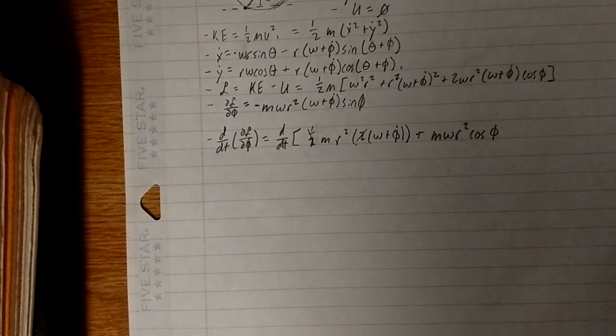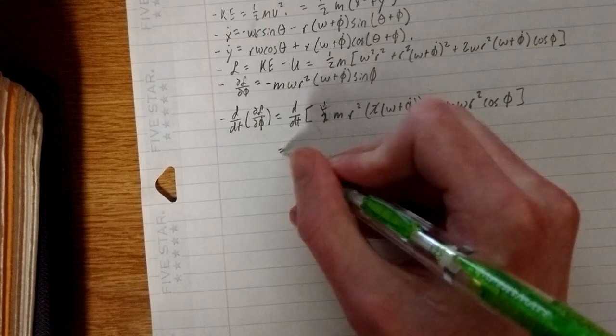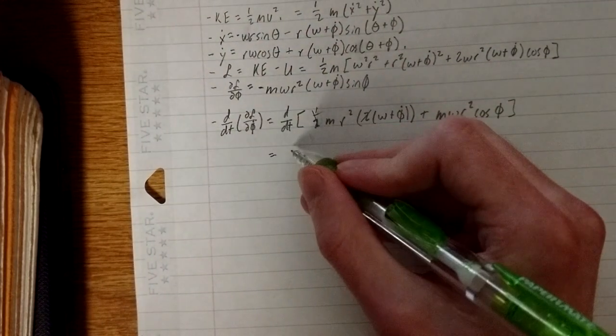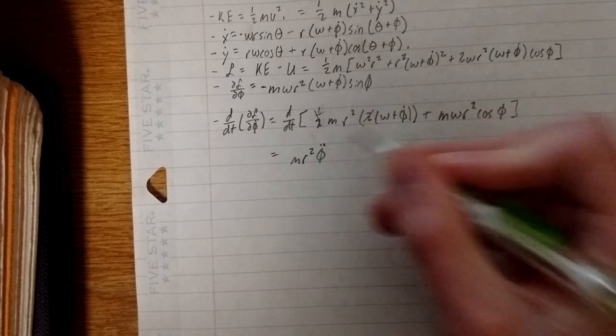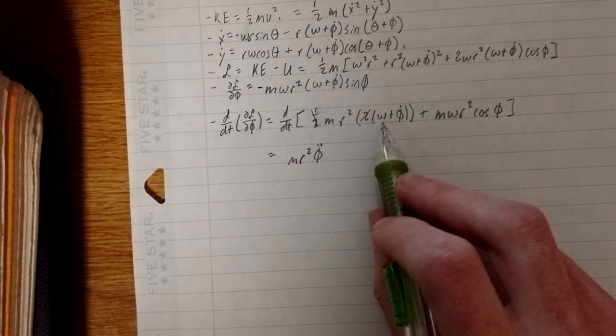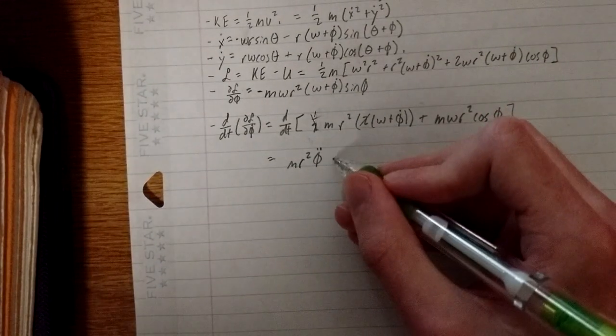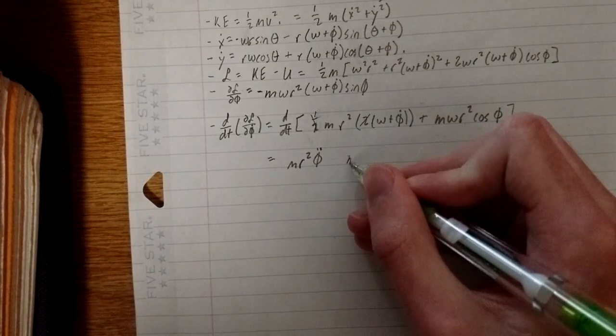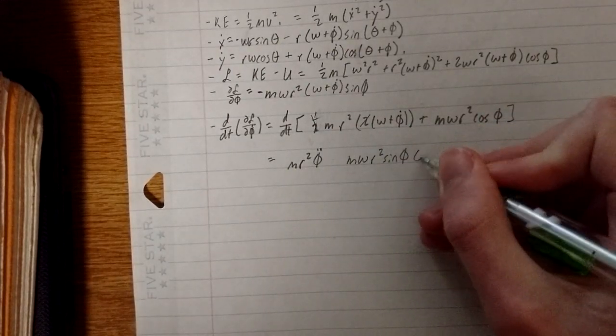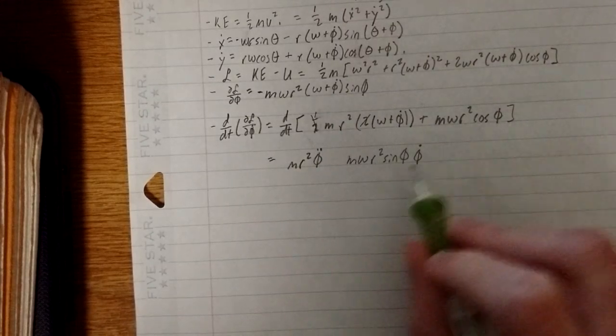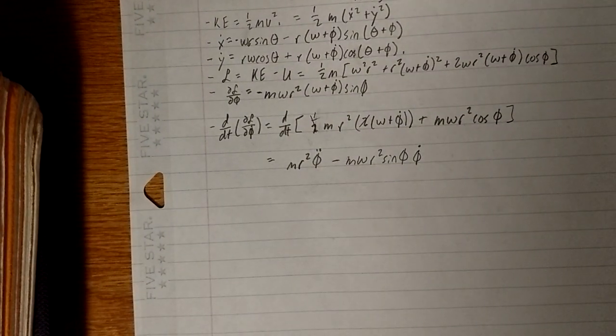So, the time derivative of all of that is then equal to m r squared phi double dot. You can see, again, that this omega term is going to die out when we take the time derivative. And then we're going to get an m omega r squared sine of phi. And, of course, the chain rule gives us a phi dot term. And, when we took the derivative of the cosine, we got a negative out front.